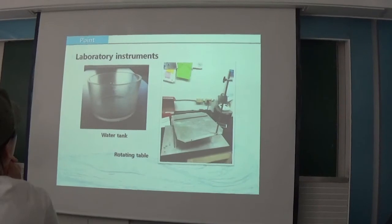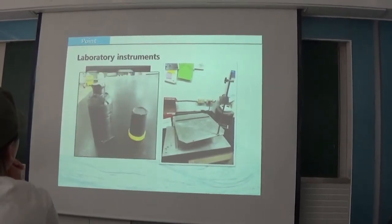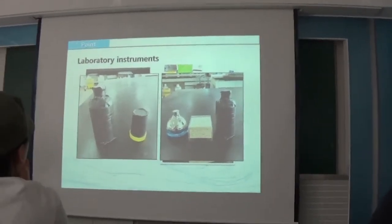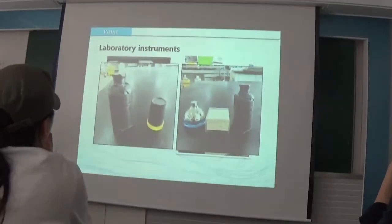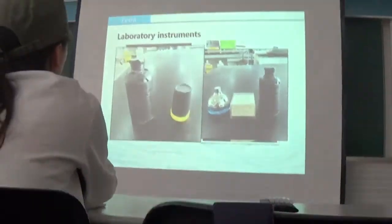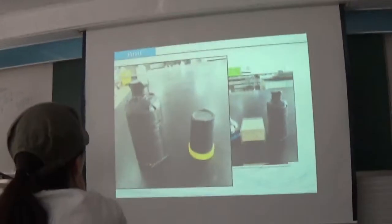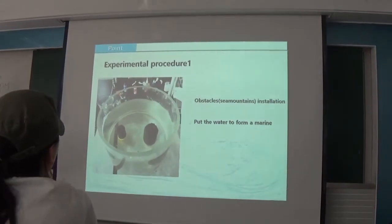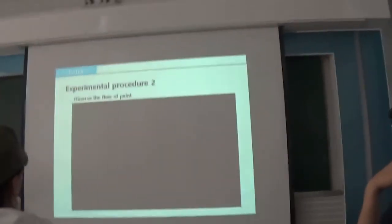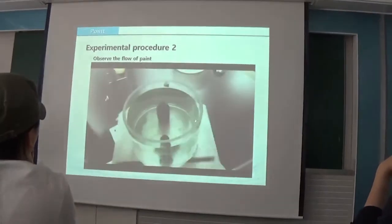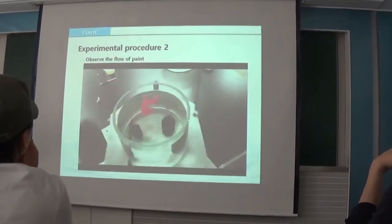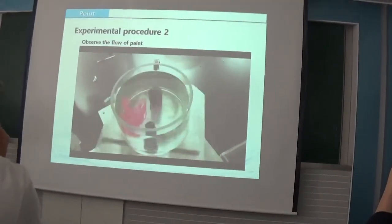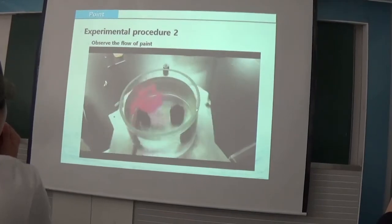We did an experiment to see Taylor columns directly. These are experimental tools: rotating table, water tank, and obstacles to represent the mountain. First picture shows round obstacles with different height. Second picture shows obstacles of different shape and height. First, we did an experiment using obstacles in the first picture. Set it like the picture and turn the rotating table. To make stable conditions, slowly increase speed for 2 minutes and 30 seconds and drop the ink. You can see the ink evading obstacles in round form.